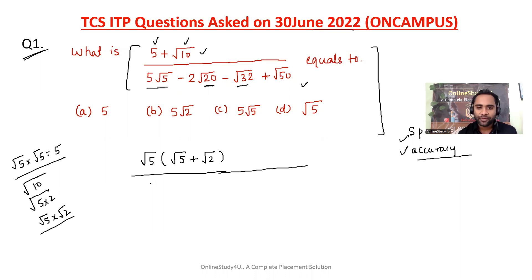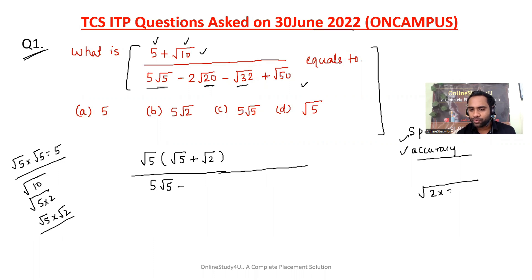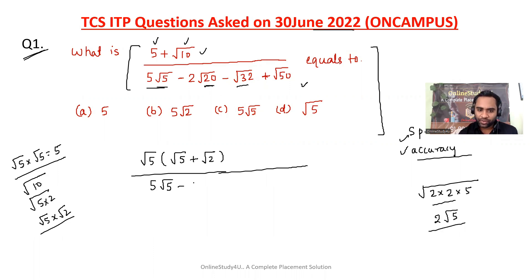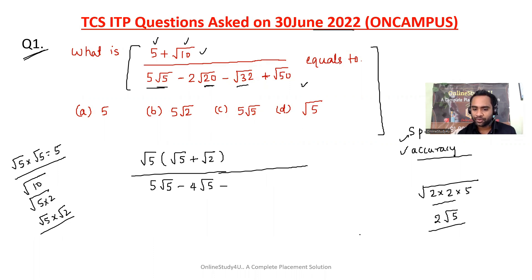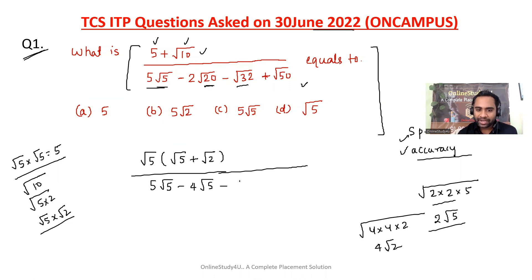So 5√5 we keep as is. For 2√20: since 4 × 5 = 20, a 2 comes outside, giving 4√5. For √32: since 16 × 2 = 32, a 4 comes outside, giving 4√2. For √50: since 25 × 2 = 50, a 5 comes outside, giving 5√2. Our intention was to change everything into √5 and √2 — that is the idea we got.